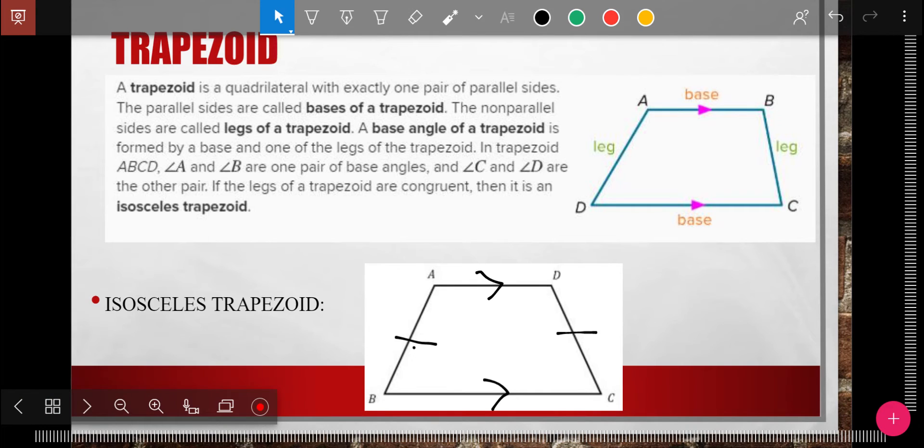The first thing we have to understand is what a trapezoid is. A trapezoid is a shape with exactly one set of parallel sides. So one set, if I look over here to the right, one set of parallel sides.